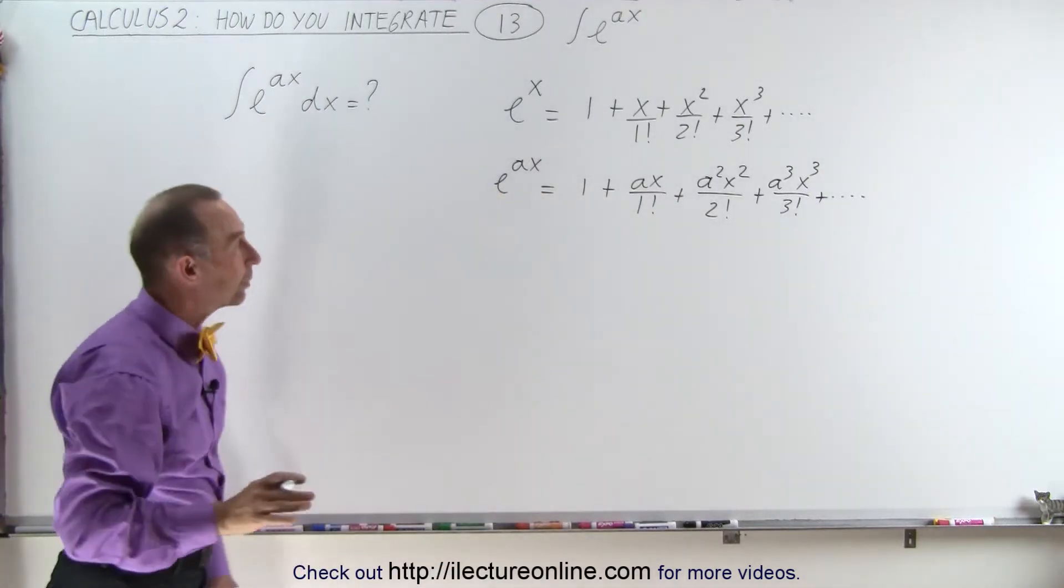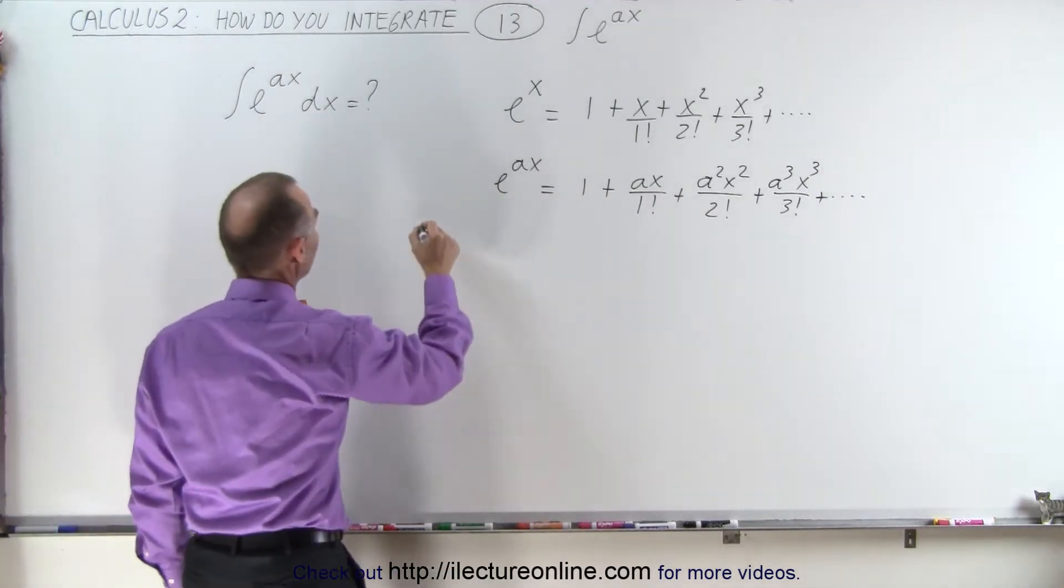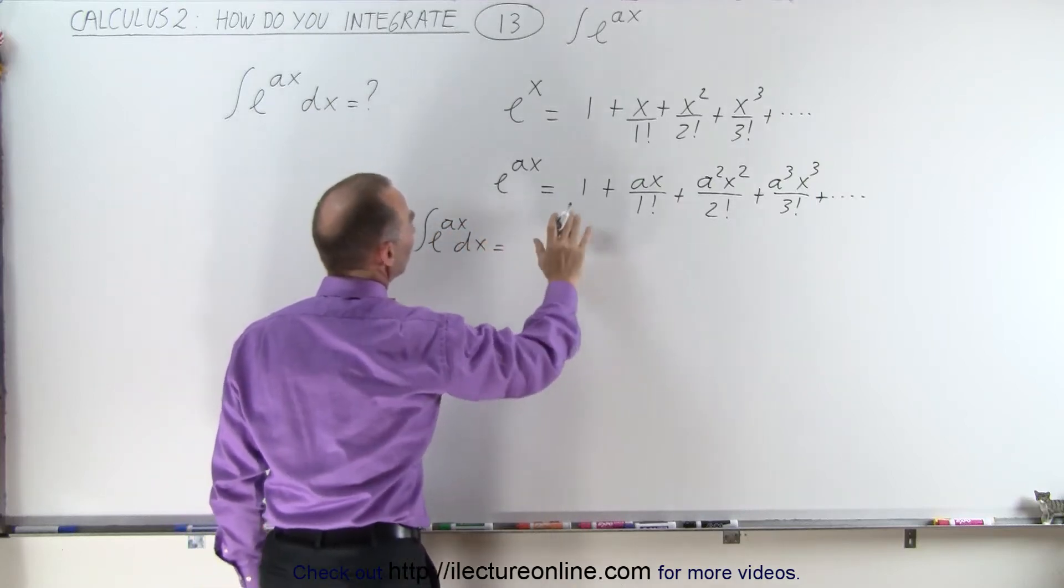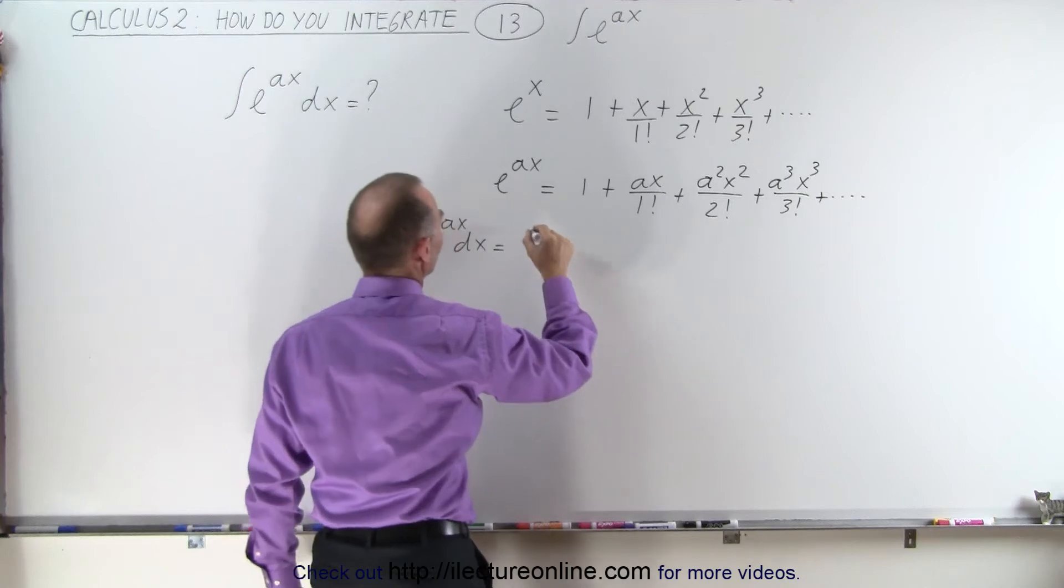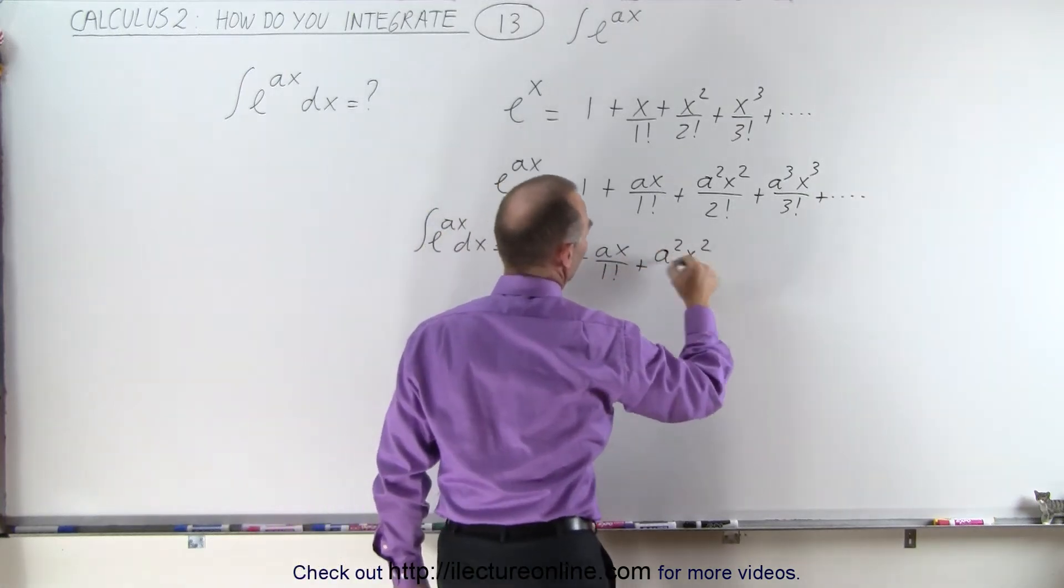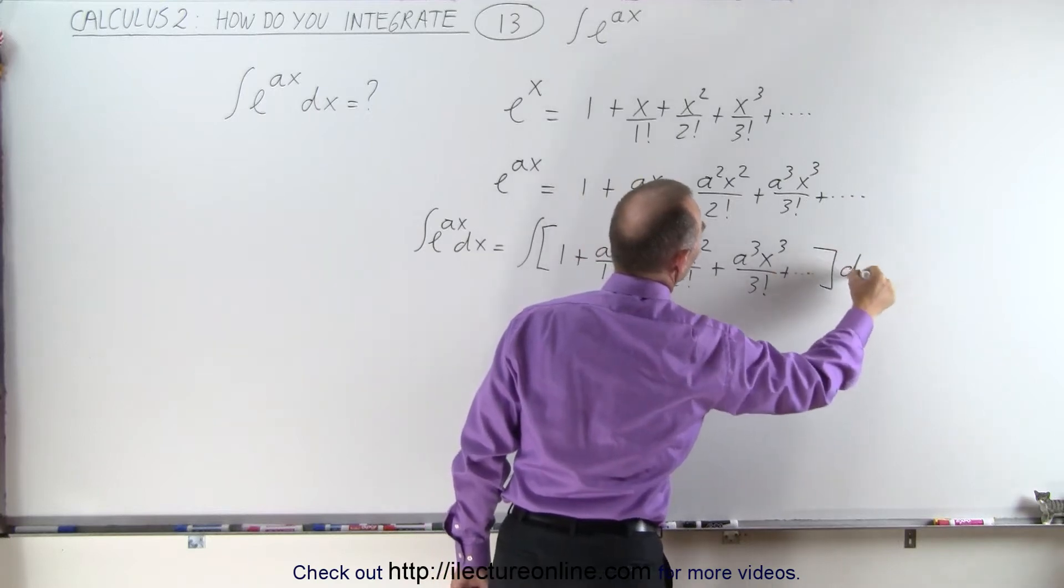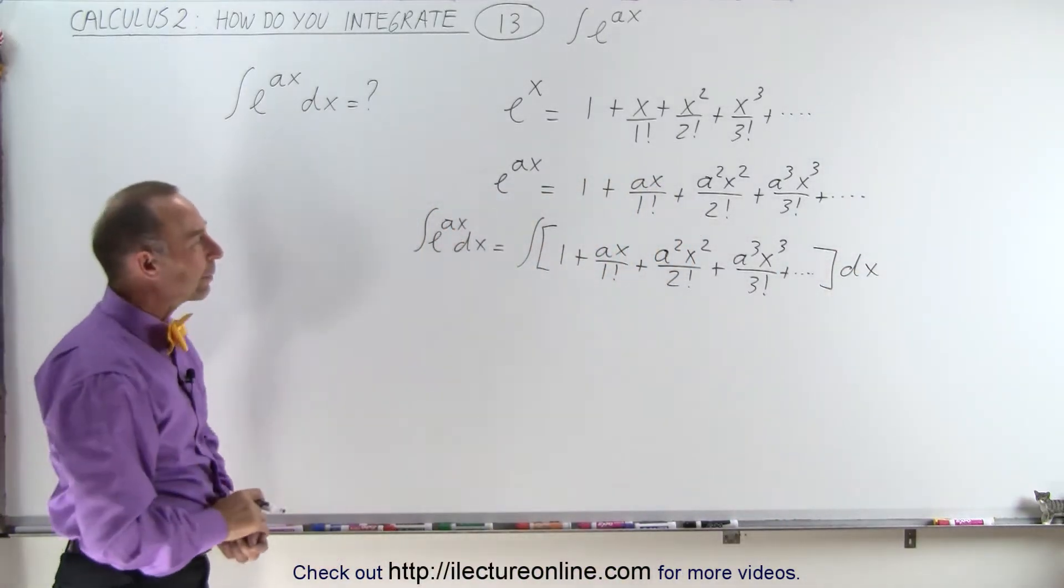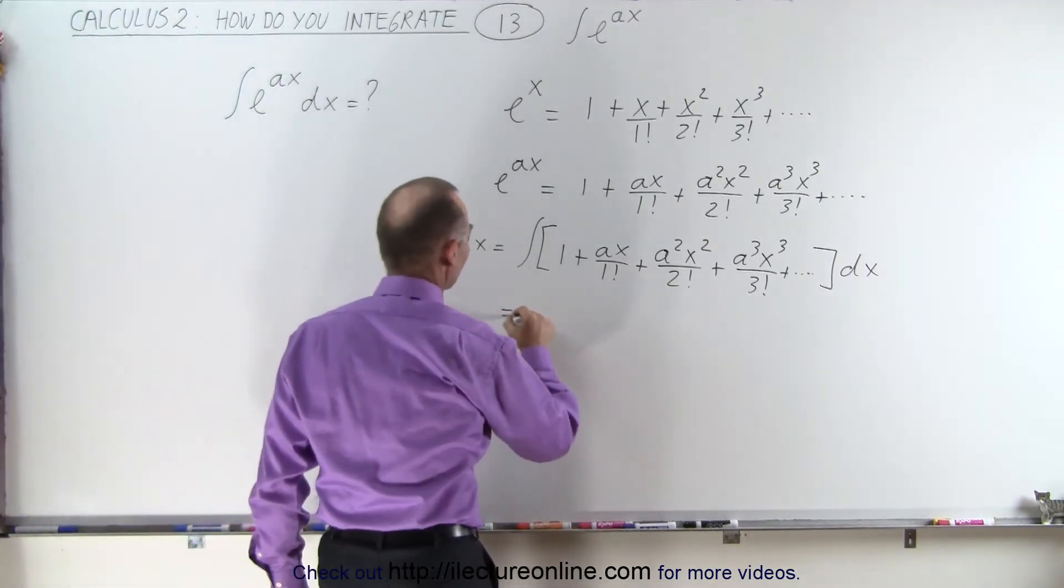Now we're ready to integrate. What we're going to do now is write that the integral of e to the ax dx must be equal to the integral of the right side, so the integral of the quantity 1 times dx. That we can integrate. The right side can be integrated and it will look as follows.